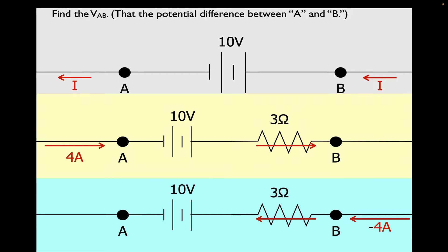Here's the first part. I'm going to look at the gray section at the top, with points A and B on the two sides of the battery. To find the potential difference, I need to assume something about the potential at A, and I'm going to assume that it's zero volts — it could be anything. I don't know what it is compared to the rest of the circuit, but between A and B, I'm assuming A is zero volts. I go across the battery from negative to positive as I go from A to B. Conventional current flows from high potential to low potential, so across the battery, the negative side is low potential and the positive side is high potential.